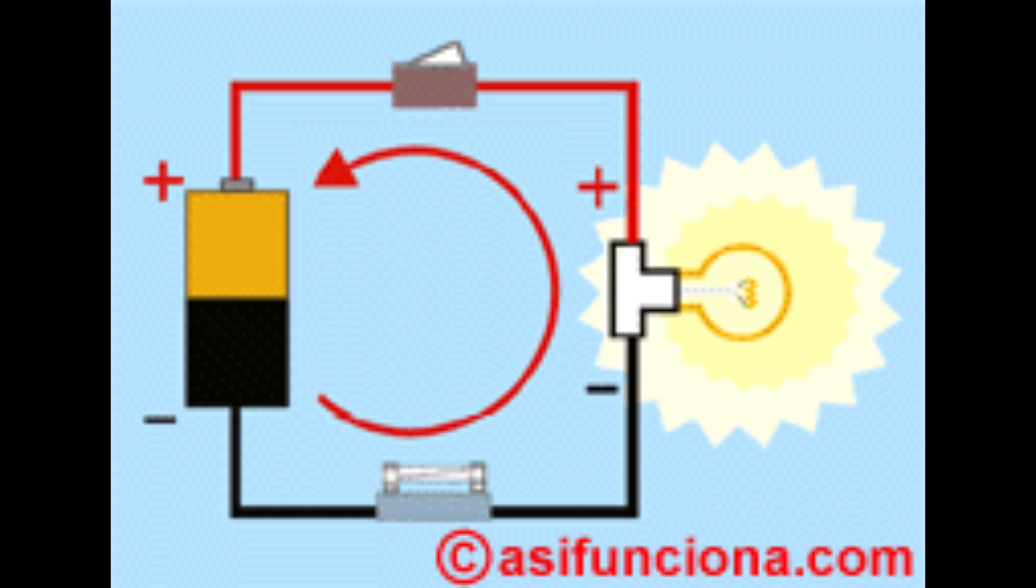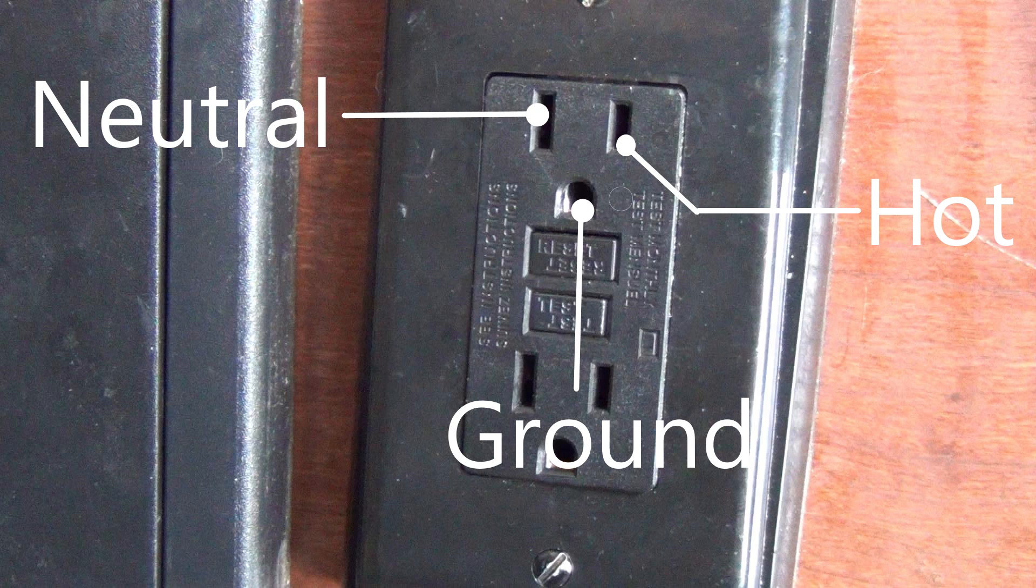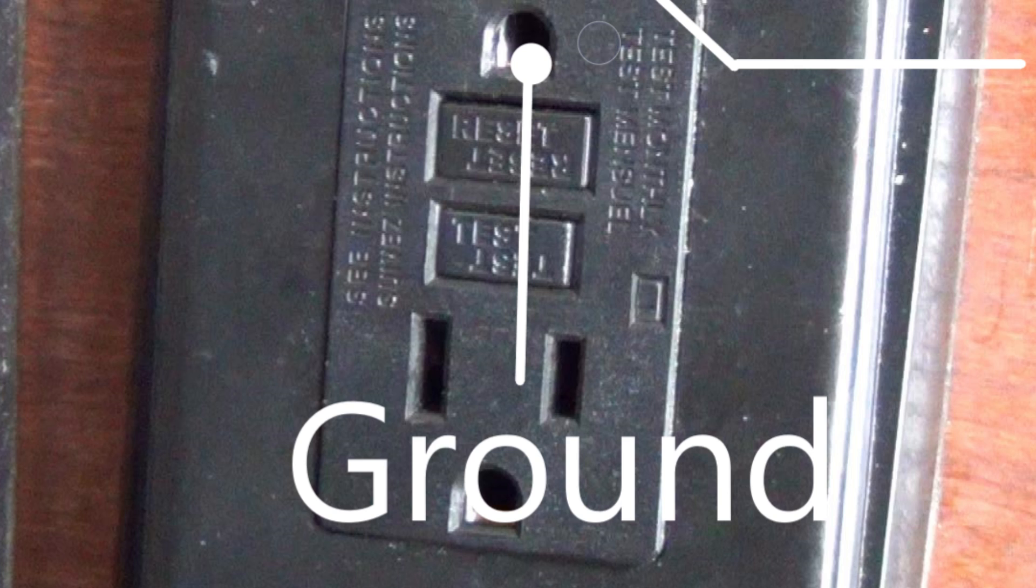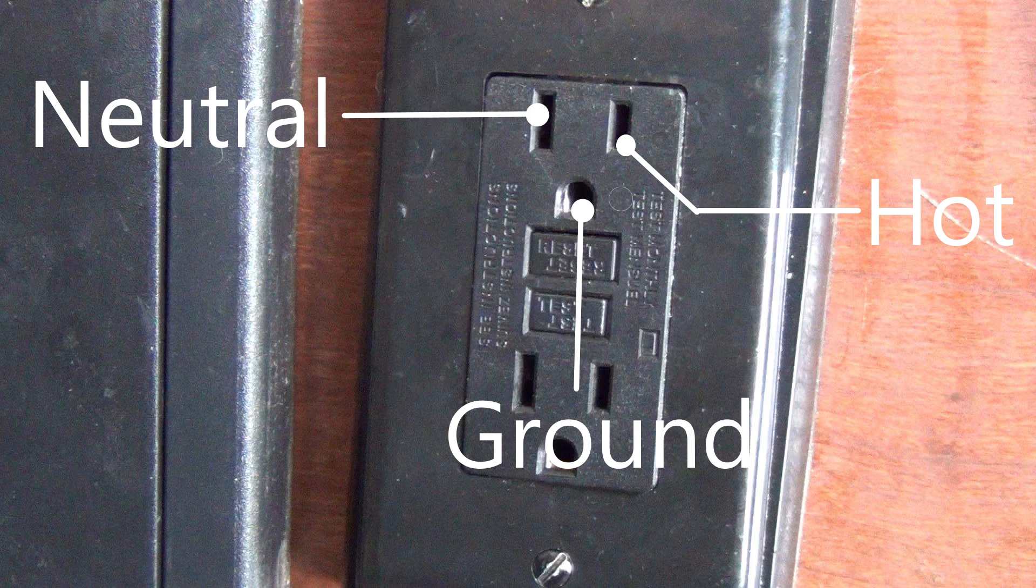The narrow slot is the hot slot, and the wide slot is the neutral slot. Unlike our simple baby representation, electricity has to actually flow in a continuous path. So these are kind of the equivalent of in and out doors for electricity. The U-shaped slot is the grounding slot. That is the backup pathway, just in case there is some sort of breakdown in the main system. It's part of all these wiring systems, and it's there to help keep you safe.